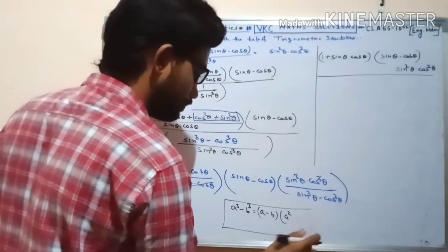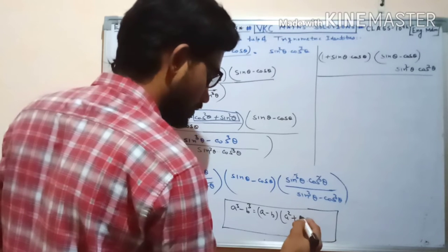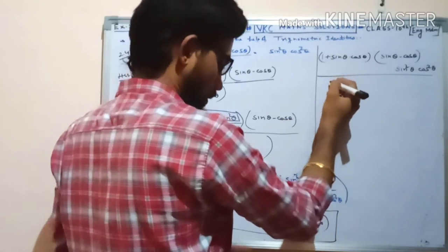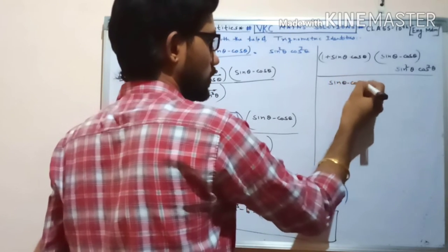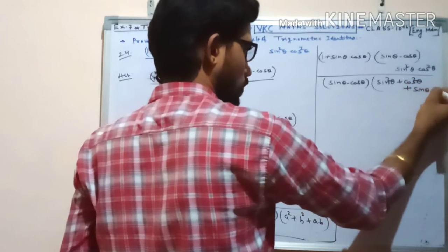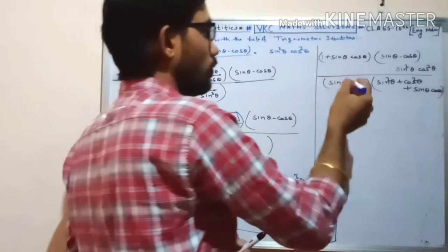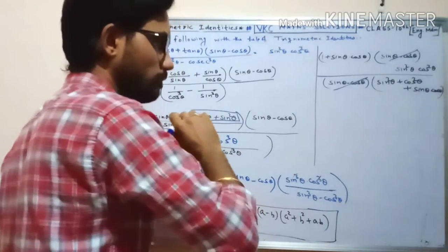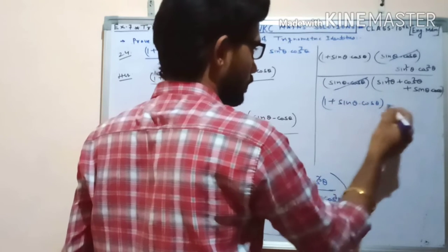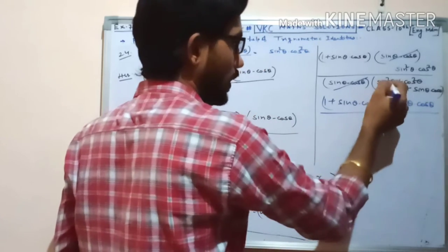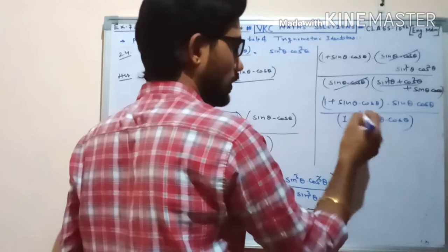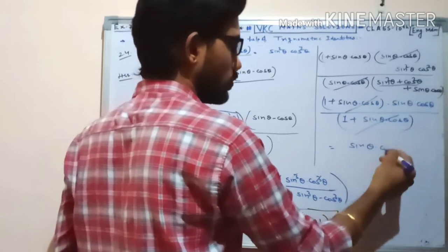Now apply the identity a³ − b³ = (a − b)(a² + b² + ab). So sin³θ − cos³θ = (sinθ − cosθ)(sin²θ + cos²θ + sinθ·cosθ). Here the numerator has (sinθ − cosθ) and the denominator also has (sinθ − cosθ), so they cancel. The numerator remaining is (1 + sinθ·cosθ)·sinθ·cosθ, and the denominator is (sin²θ + cos²θ + sinθ·cosθ) = 1 + sinθ·cosθ. These two parts are the same and cancel, leaving sinθ·cosθ.